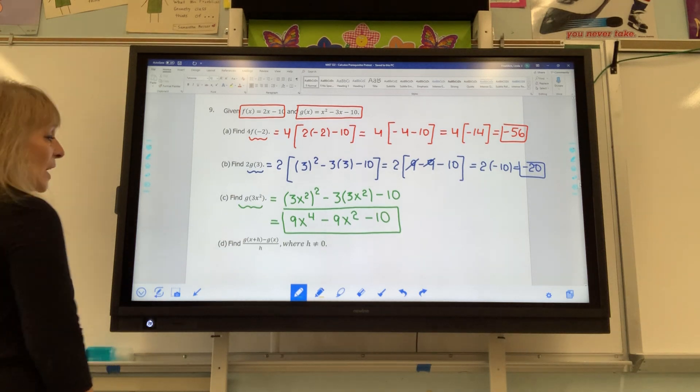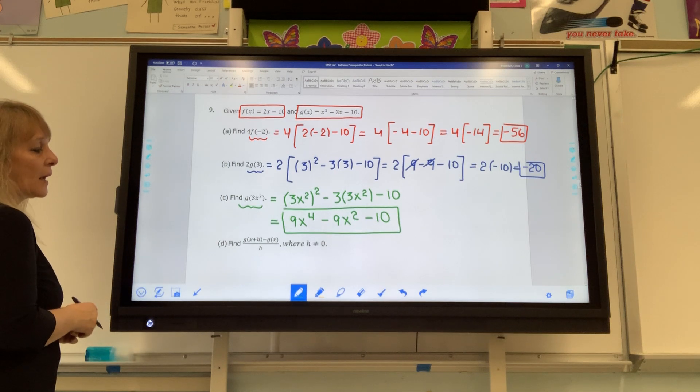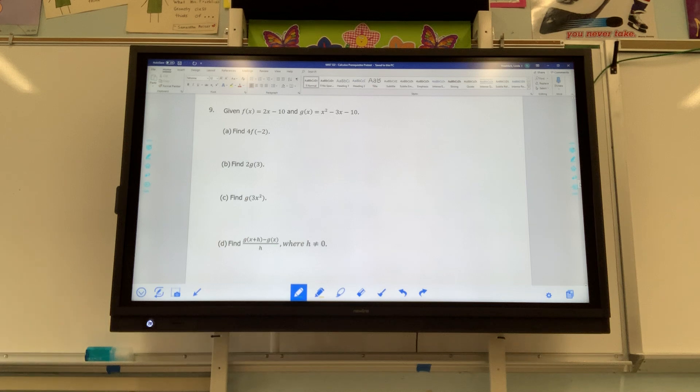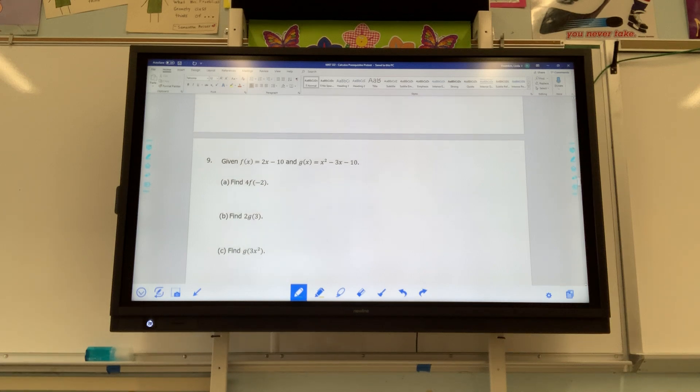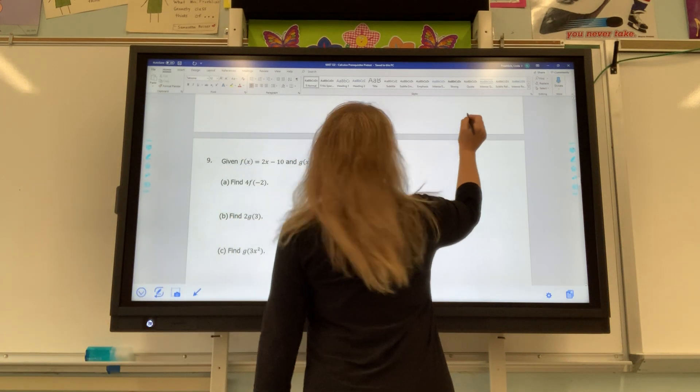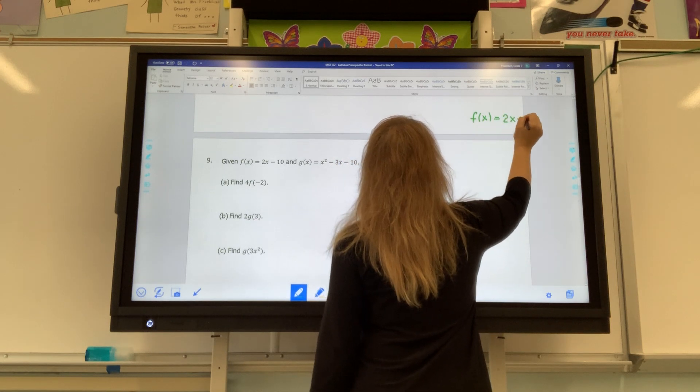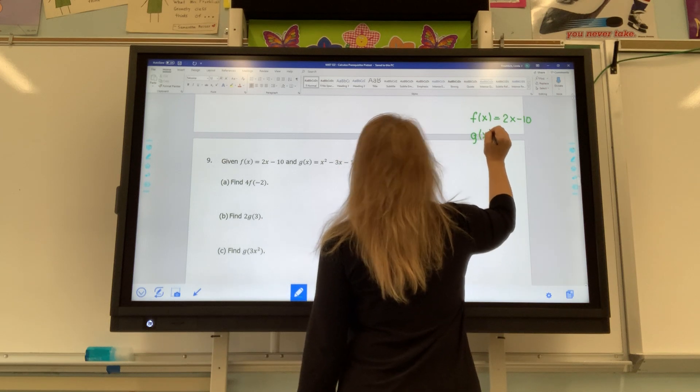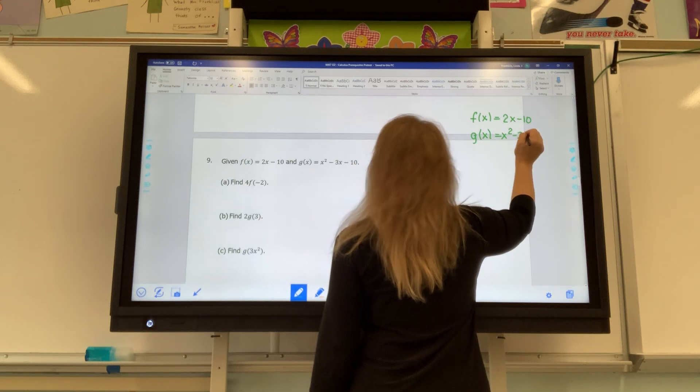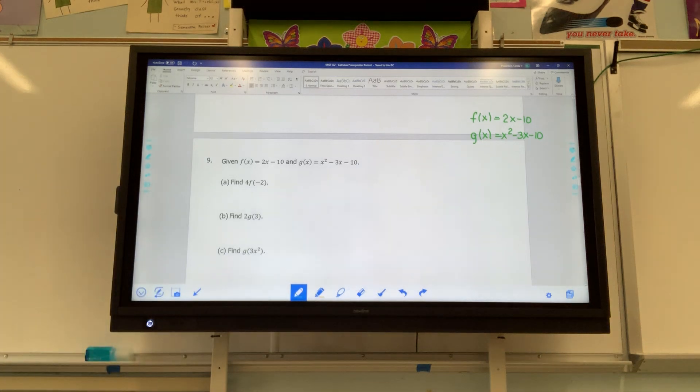Now we're up to letter d, which I may need a little bit more room on. So I'll move it up. I forgot what the actual expressions were, so maybe I should write them down. We'll put them over here. F of x is 2x minus 10, and g of x is x squared minus 3x minus 10.